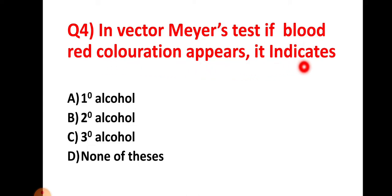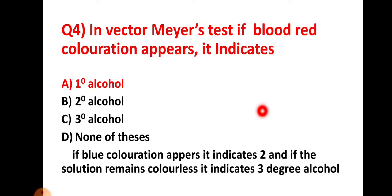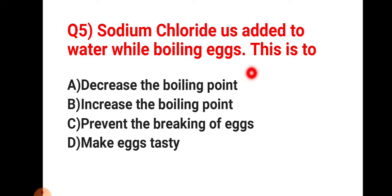Question number four: in Victor Mere's test, if blood-red coloration appears, what does it indicate? There are three types of alcohols tested by Victor Mere's test. Blood-red coloration indicates primary alcohol; blue coloration indicates secondary alcohol; and if it remains colorless, it indicates tertiary alcohol.